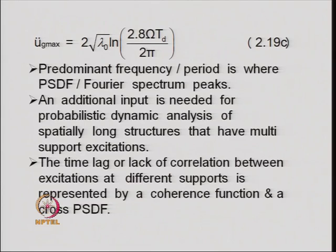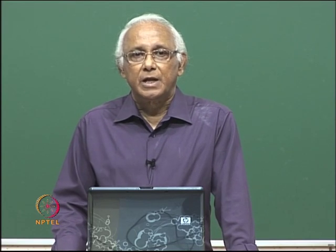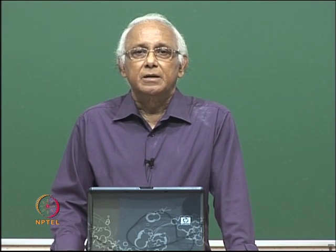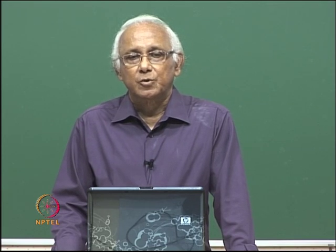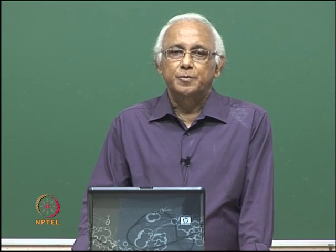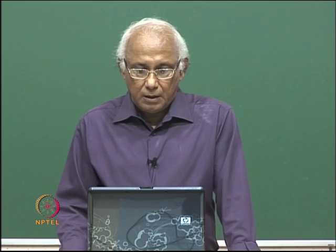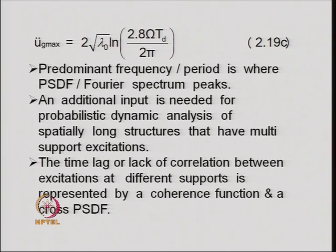Another input is needed for probabilistic dynamic analysis of spatially long structures with multi-support excitations. To account for the effect of phase lag, the cross-power spectral density function or cross-correlation function is provided along with the power spectral density function. This time lag or lack of correlation between excitations at different supports is generally represented by a coherence function and a cross-power spectral density function.